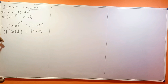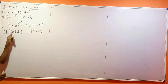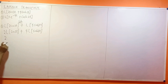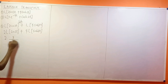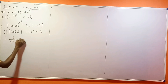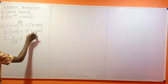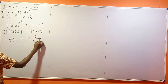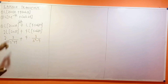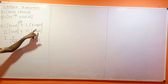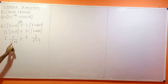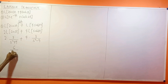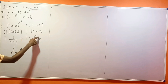Now, the Laplace transform of sin(3t) is 3 over s² plus 9. So we have 2 times 3 over s² plus 9, then plus 4 times 3 over s² minus 9. The difference between sin(3t) and cosh is this minus at the denominator. So 2 times 3 gives me 6 over s² plus 9, plus 4 times 3 gives me 12 over s² minus 9.